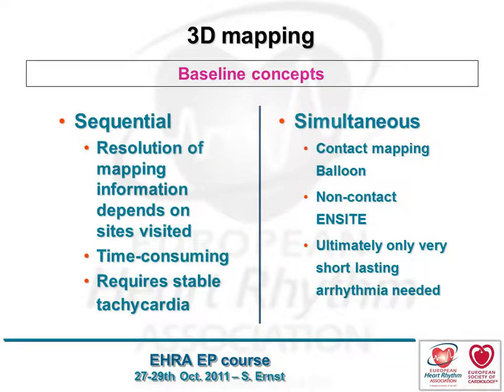Basically there are two different concepts, with different companies providing one or the other. One is a sequential concept, where you collect points by moving your catheter around, and the other is simultaneous — with one beat, one cardiac action, one circle of the tachycardia if it's a re-entrant tachycardia, you have the whole mapping. Ideally the simultaneous mapping systems are faster because you basically get one beat and that's it. That's really good for non-sustained arrhythmias.